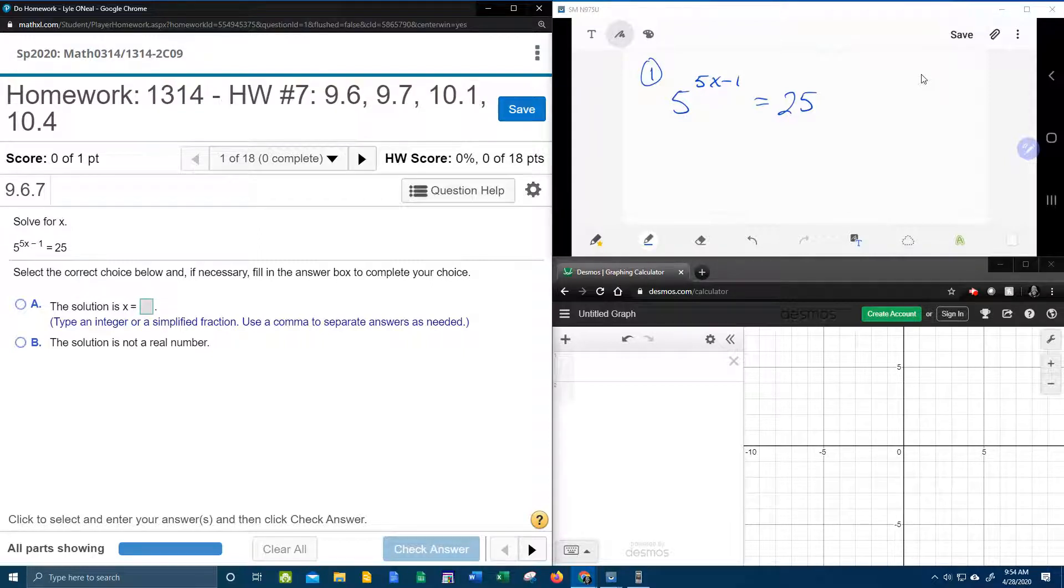All right, so first of all, I noticed that the base on the left is 5. This is 5 to the 5x minus 1.